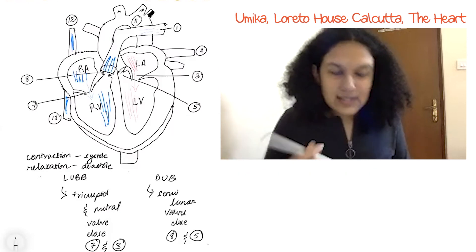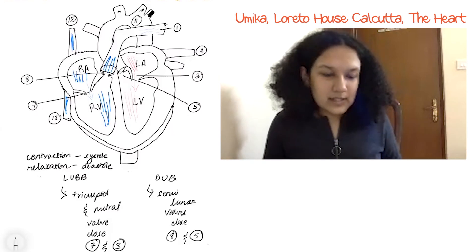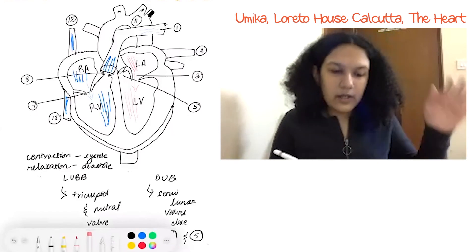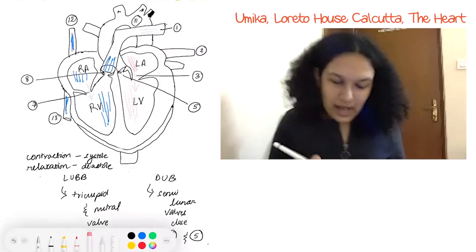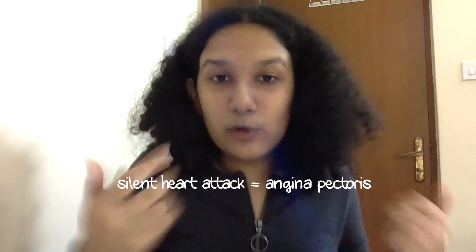That's definitely one of the most interesting parts of the circulatory system — the heart. That's roughly what we've covered today. If you follow the arrows and the colors in the diagram you'll get a hang of it. The biological term for a heart attack is myocardial infarction, and the biological term for a silent heart attack is angina pectoris. Thanks so much for watching — that's all for today.